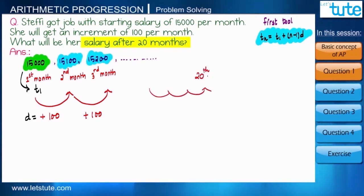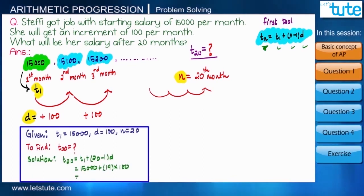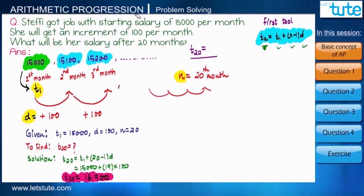So we can say that 15,000 is the first term, that is t1, and the increment is 100, that means common difference d is 100. And further it says we need to calculate her salary in 20th month. So now tell me what is given and what is asked? The position of the term is given: n equals 20, and we have to find the value of the term at that particular position, that is t20. So we have got three parameters: t1, d, and n. Now we can easily find out the fourth parameter, that is tn, and it comes out to be 16,900. So her salary in 20th month will be 16,900.